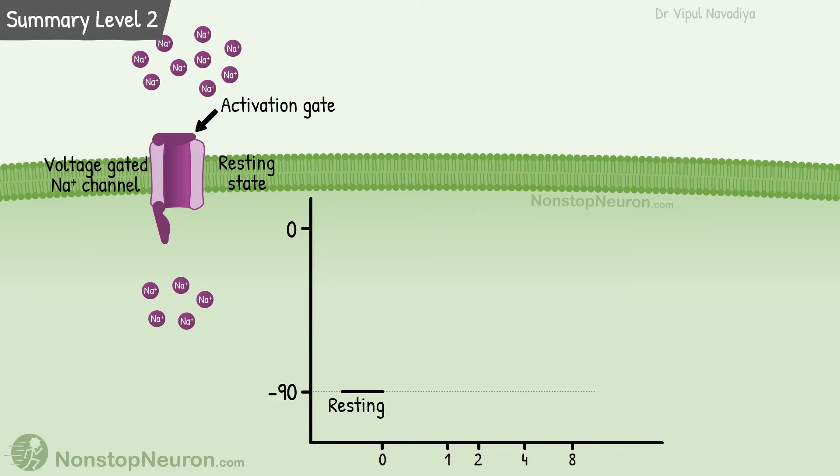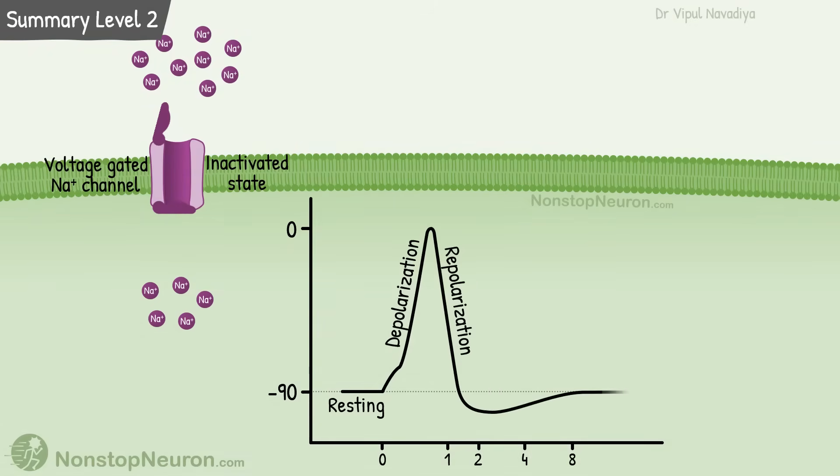Voltage gated sodium channels have an activation gate and an inactivation gate. Opening of activation gate allows passage of sodium causing depolarization. Then closing of inactivation gates stops the sodium entry contributing to repolarization. Once resting membrane potential is re-established, the channel returns to its initial resting state.